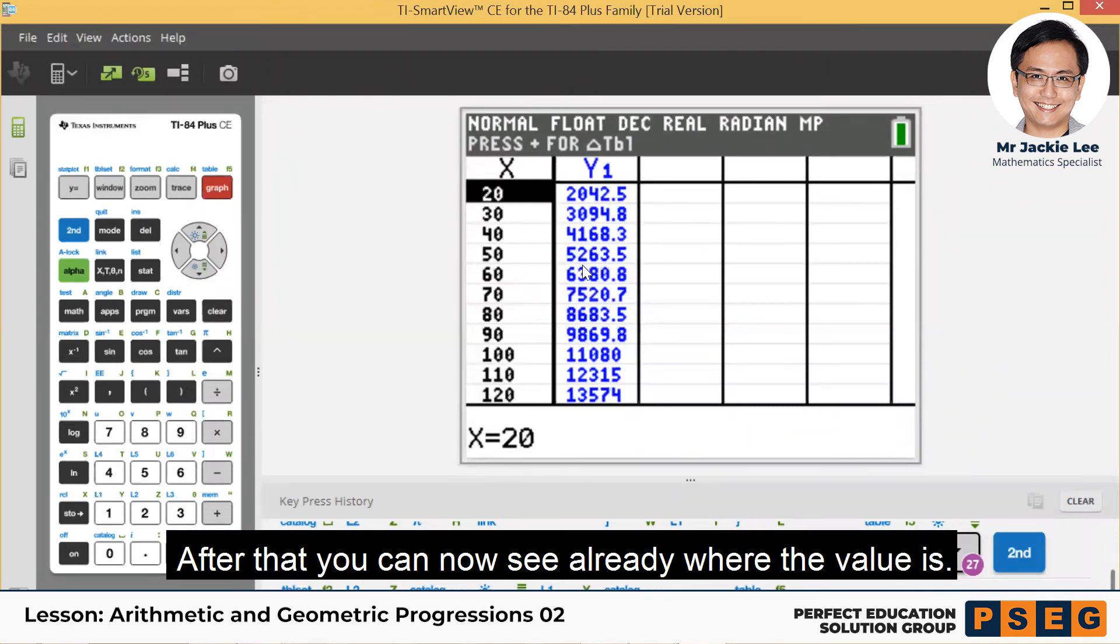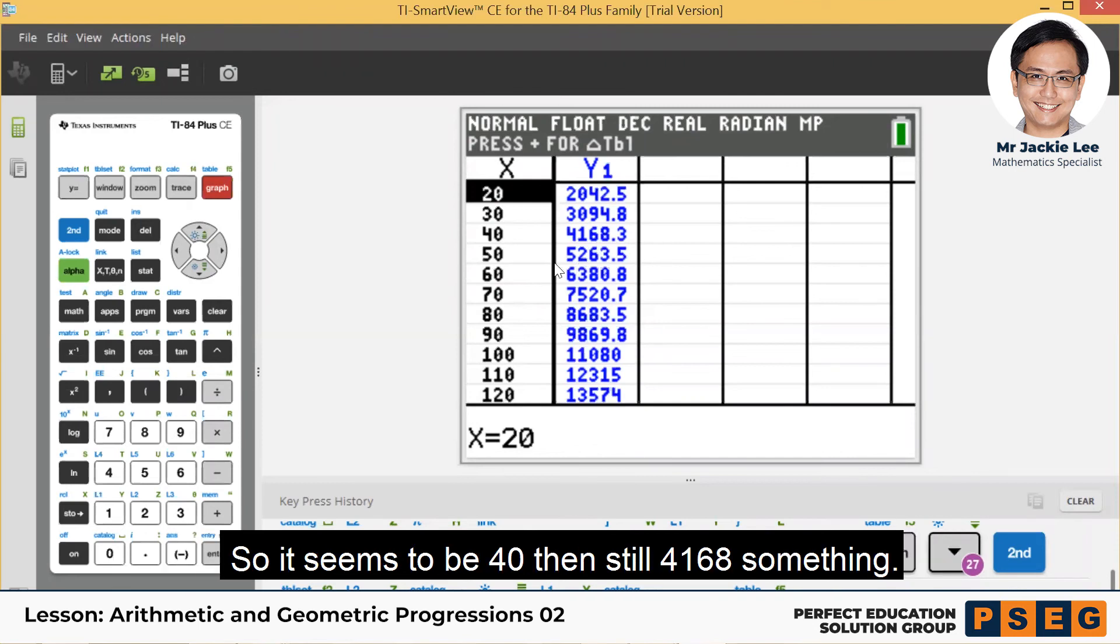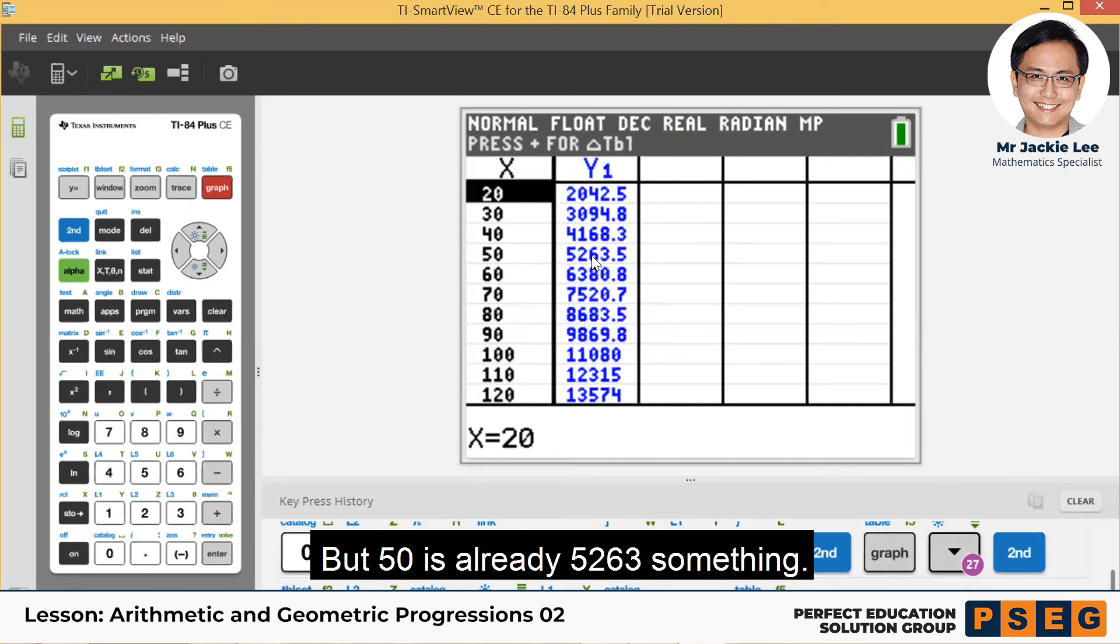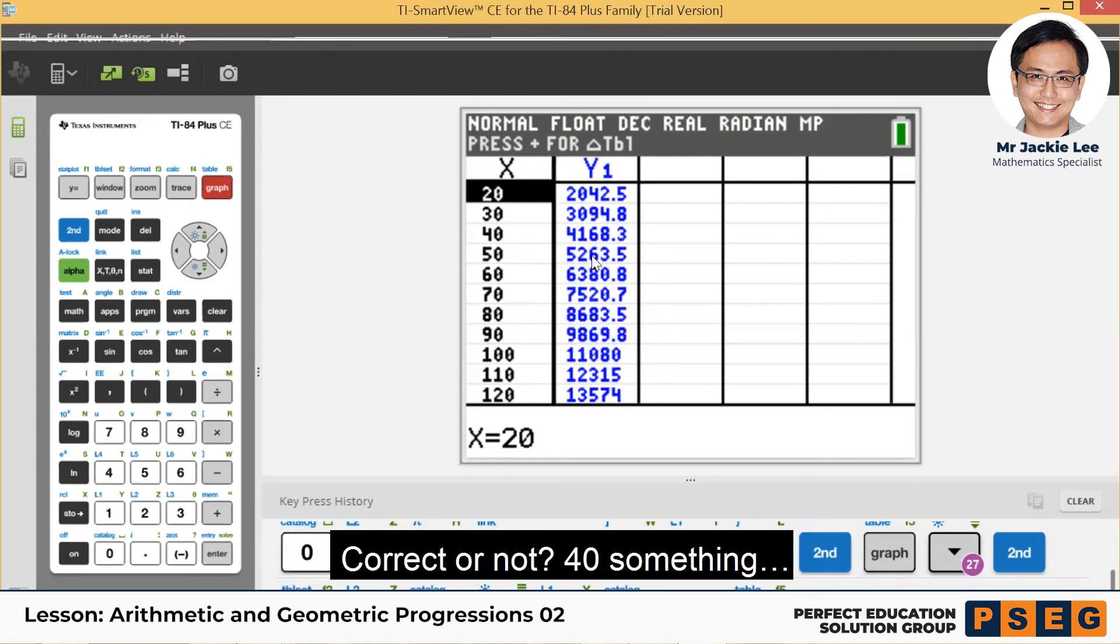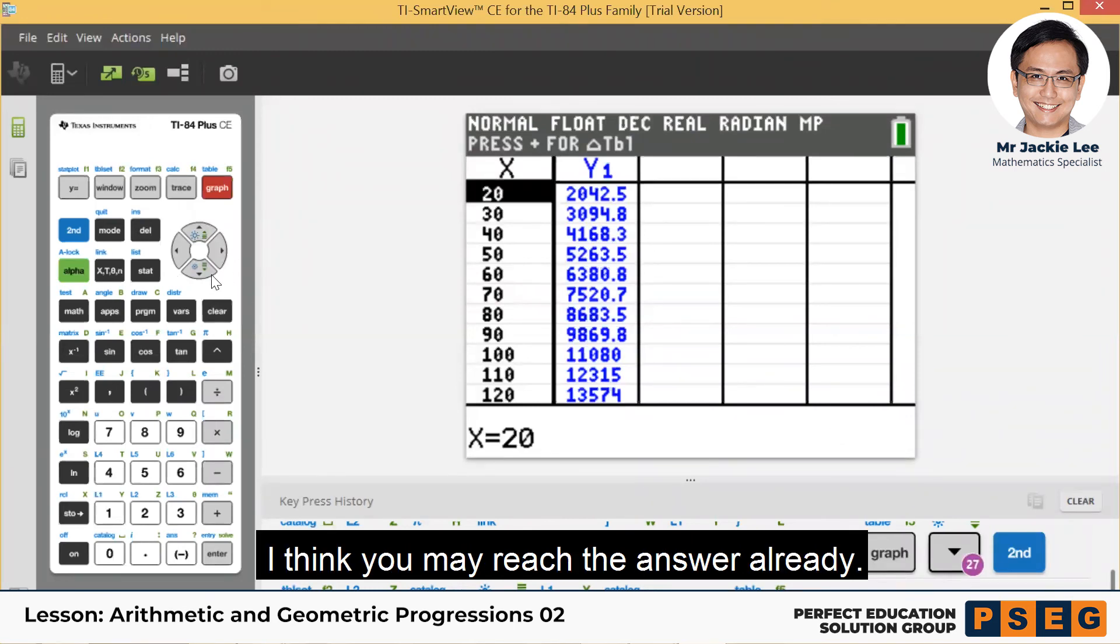After that you can now see already where is the value. So it seems to be 40, then still 4168 something. But 50 already 5263 something. So obviously the answer should be 40 something, probably not 50 something. Just now you keep pressing 1, I think you may reach the answer.